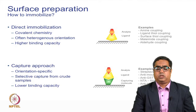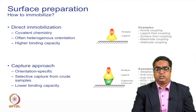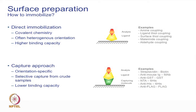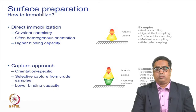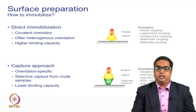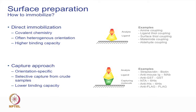In the capture process, most molecules are expressed with tags these days. Different chips capture specific tags — for example, a streptavidin chip captures biotin-tagged proteins, peptides, DNA, and RNA. Anti-mouse and anti-human capture kits are available for capturing antibodies and antigens. Anti-his antibodies or NTA chips capture histidine-tagged proteins, and anti-flag antibodies capture flag-tagged molecules.